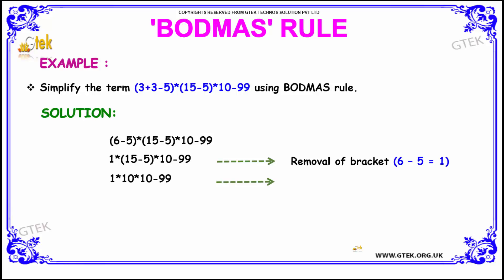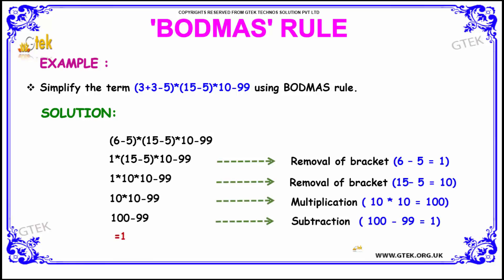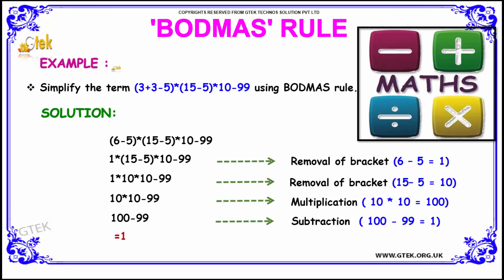Let us see an example for the BODMAS rule. The given expression is: simplify the term (3+3-5)×(15-5)×(10-99) using BODMAS rule.